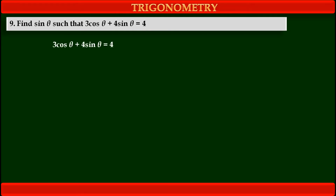Friends, now see in this given problem the given condition is 3cos theta plus 4sin theta is equal to 4. By using this equation we have to find sin theta. Since we have to find sin theta, we have to change this equation into a one-variable equation. Currently this equation has two variables, cos theta and sin theta, so we have to change cos theta also in terms of sin theta. That's why first we have to shift the remaining terms to the other side so that we can keep the cos theta term alone, and after squaring we can change it as 1 minus sin square theta by using the identity.